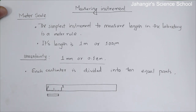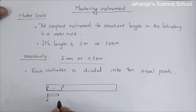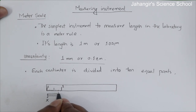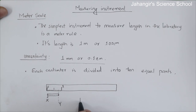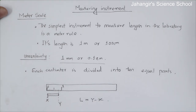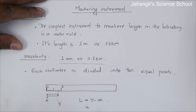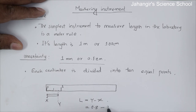The length of the rod is x at one end, and the reading of the mark that coincides with the right end is y. Then the length of the rod will be y minus x. In this case, the reading at the y mark is 0.8 centimeter, minus zero, so the length of the rod is 0.8 centimeter.